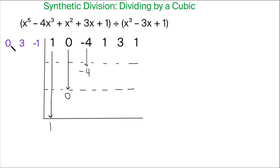So what we're going to do is take these three numbers and multiply them by that 1 and the answers go in the diagonal. So 0 times 1 is 0, 3 times 1 is 3, and negative 1 times 1 is negative 1.